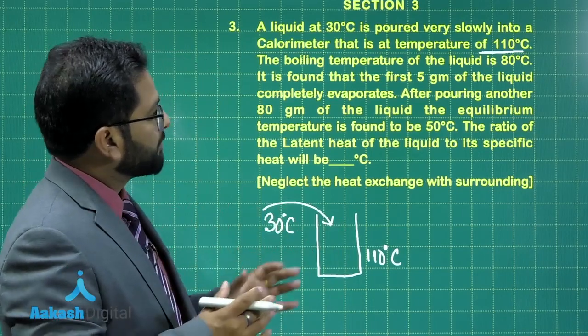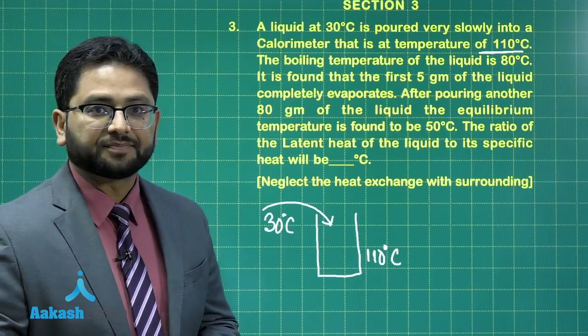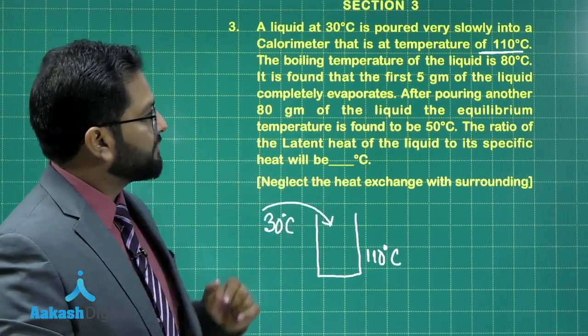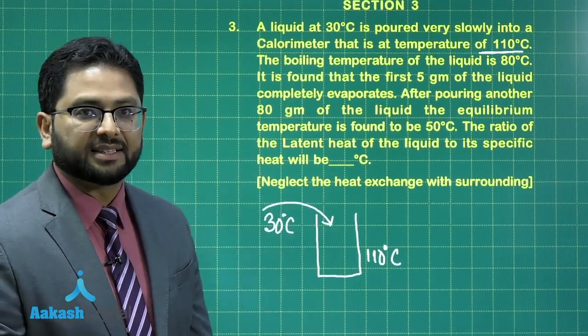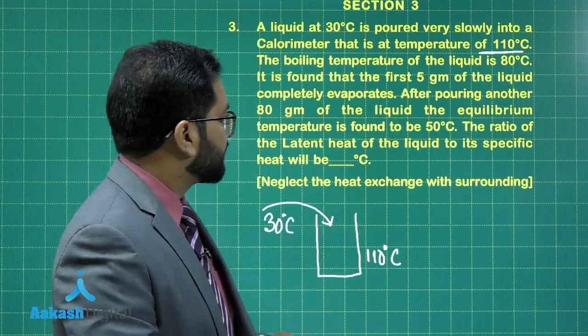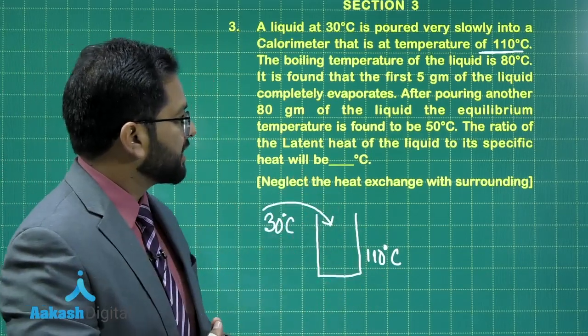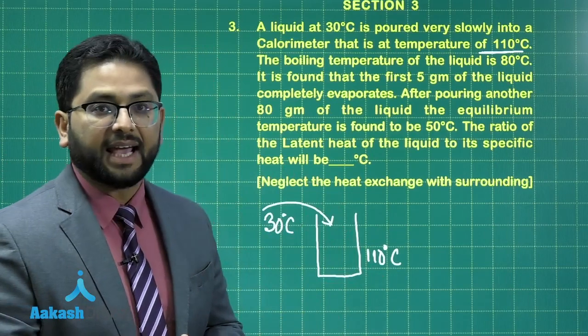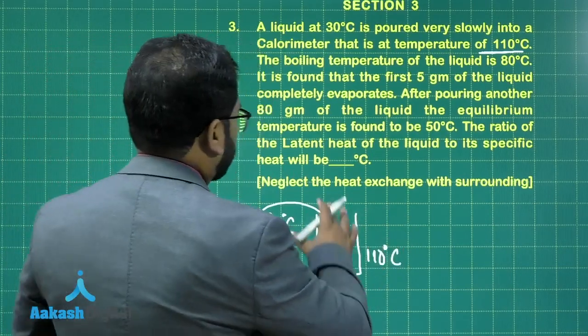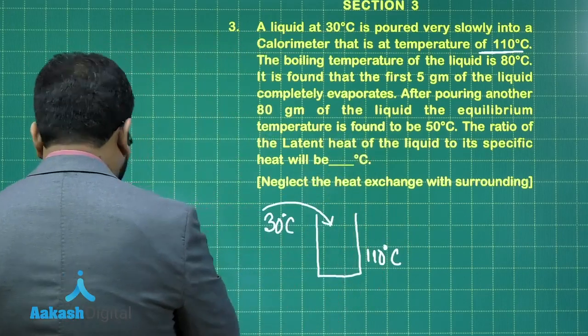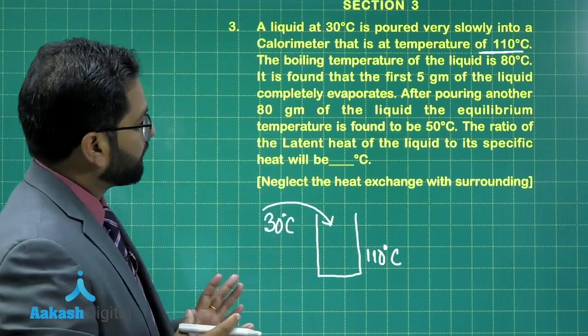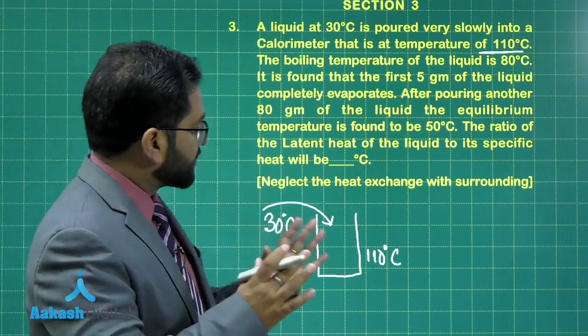The boiling temperature of the liquid is 80 degrees centigrade and it is found that the first 5 grams of liquid completely evaporates. And after that another 80 grams of liquid is poured which brings the temperature to 50 degrees centigrade as the equilibrium one. On the basis of that we need to calculate the ratio of latent heat to the specific heat of the liquid. So let's go step by step.